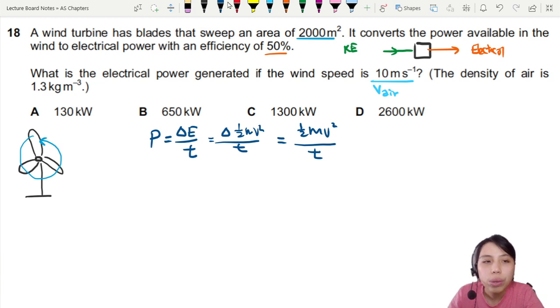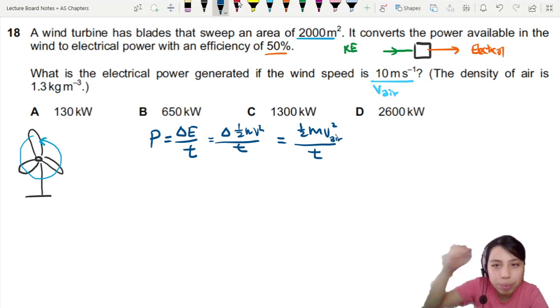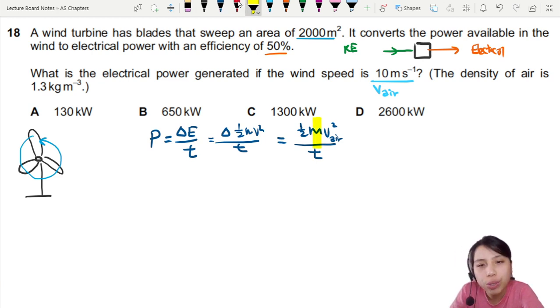Next, we know the V. This V is V of air, not V of the turbine rotating in a circle. And we don't know the mass of the air. That's a problem. We need to find the mass of the air. But they gave us other things. They give us area. They give us density.